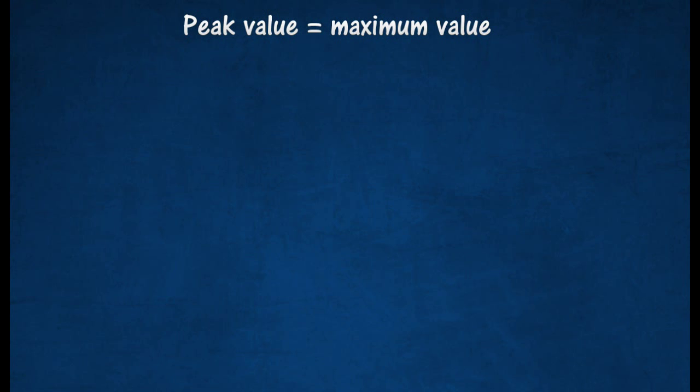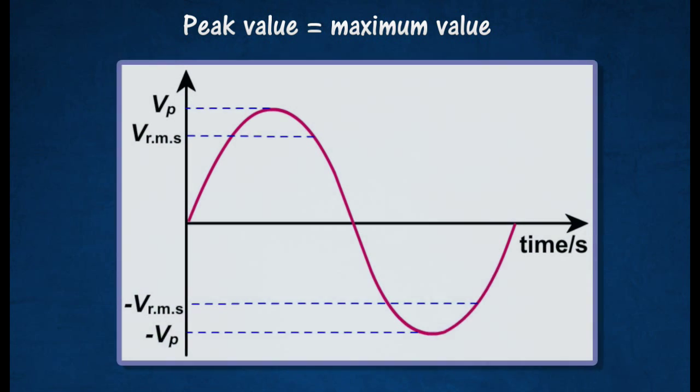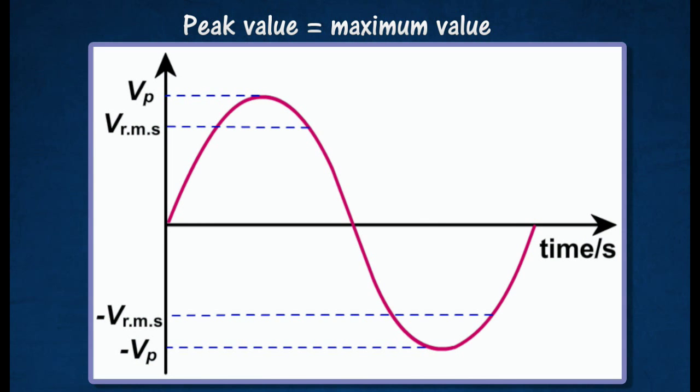The peak value of an alternating current is the maximum value of the alternating current. The values of alternating current increase from zero to its maximum value and then decrease to zero again before it alternates.